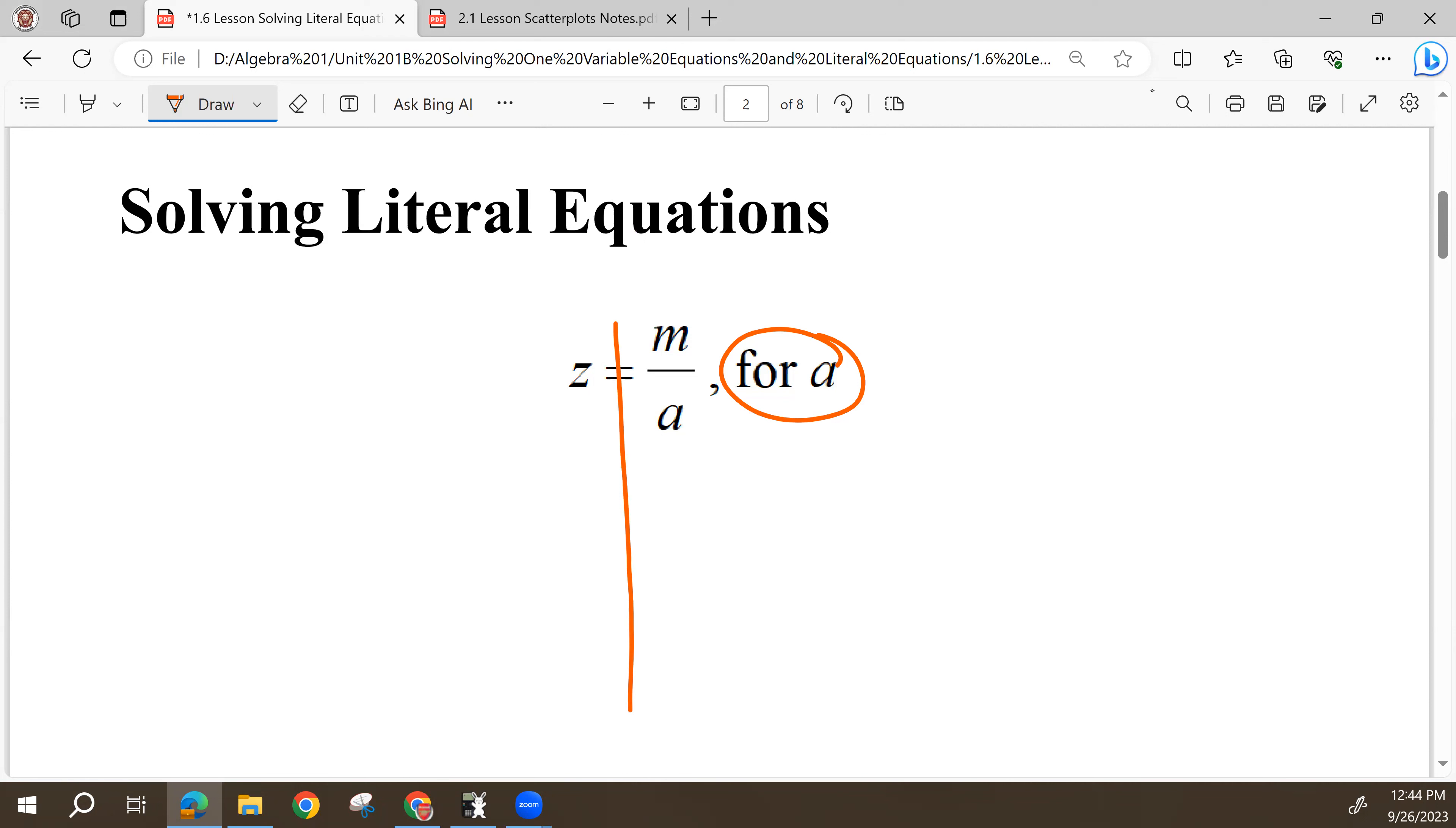So right now, A is dividing M, and we don't want it doing that, and so we're going to move A over to this side of the equation. Right now, it's doing division, and so when we move it to the other side of the equal sign, it's going to do the opposite operation, and it's going to multiply Z.